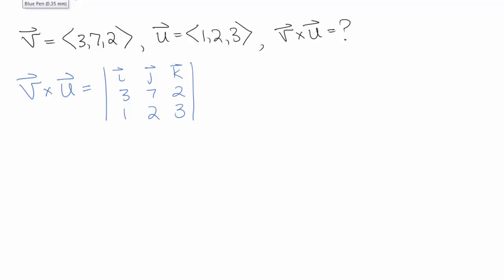We're going to find the cross product of these two vectors: V equals 3, 7, 2, and U equals 1, 2, 3. Since we're doing V cross U, we put V first, so the 3, 7, 2 is above the 1, 2, 3.